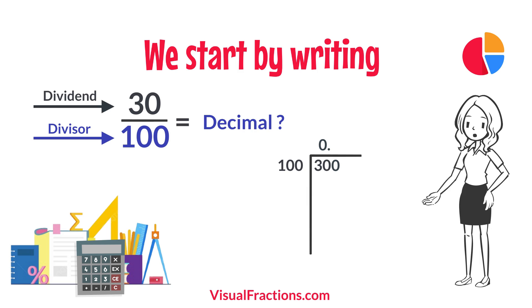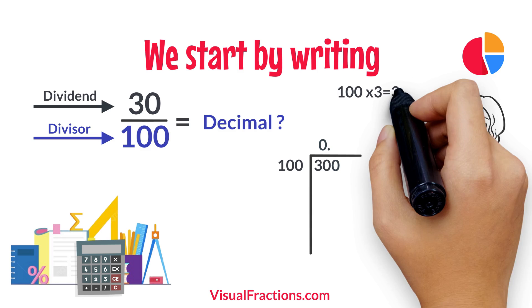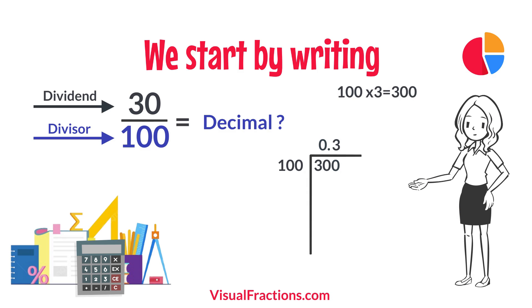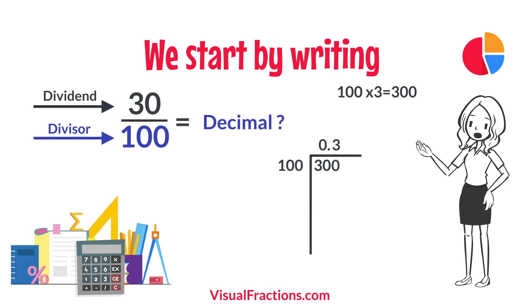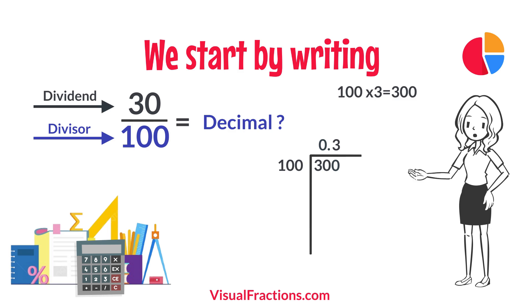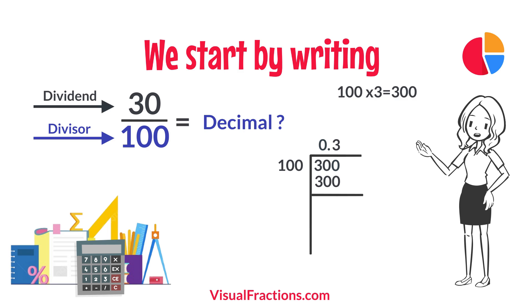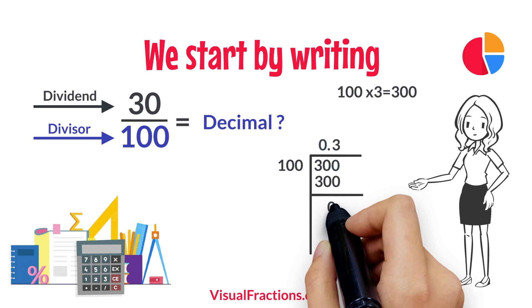How many times does 100 go into 300? Exactly 3 times. We write 3 after the decimal point in the quotient, making it 0.3. Multiplying 3 by 100 gives us 300. When we subtract 300 from 300, we get a remainder of 0.